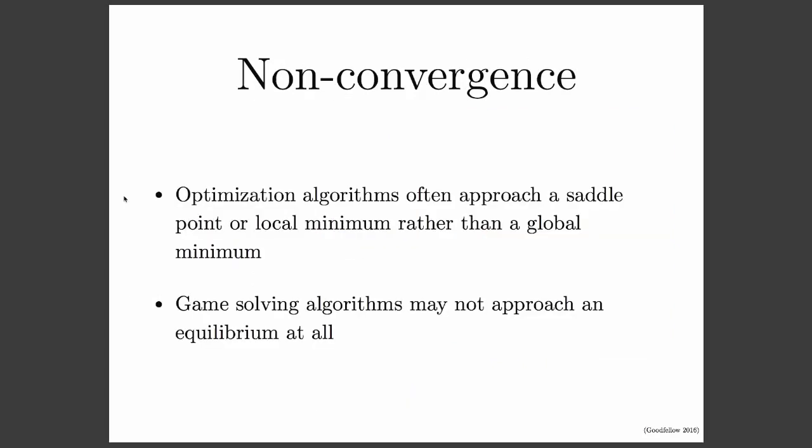Probably the biggest issue with generative adversarial networks, and to some extent with other forms of adversarial training, is that the training process does not always converge. Most of deep learning consists of minimizing a single cost function. But the basic idea of adversarial training is that we have two different players who are adversaries, each minimizing their own cost function. When we minimize a single cost function — that's optimization — it's unusual to have a major problem with non-convergence. We might get unlucky and converge to a saddle point with a high cost value, but we'll usually at least converge to some general region. When we play a game with two players each simultaneously minimizing their own cost, we might never actually approach the equilibrium of the game.